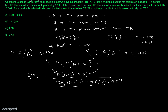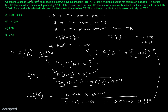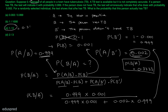Now we have all the information needed. Probability of B given A equals 0.999 multiplied by 0.001, divided by 0.999 times 0.001 plus 0.002 times 0.999. Solving this gives probability of B given A equal to 0.3333. That means the right answer is part C — 1 over 3 is nothing but 0.3333. So the right answer is part C, and that's it for this question.